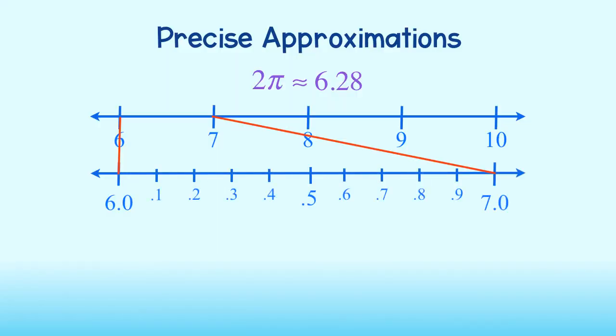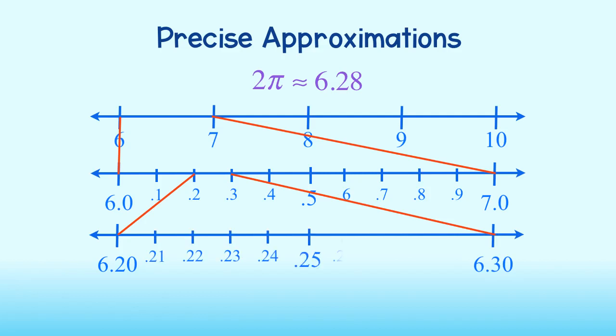Since 2π is 6.28 and we know the value will fall somewhere between 6.2 and 6.3, we can now enlarge this area of the number line, dividing it into 10 sections. We see that 6.28 is precisely here on the number line.